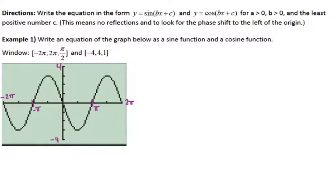We can find the amplitude just by looking at how high or how low the graph goes. The amplitude is 3 because the highest it goes is positive 3 and the lowest is negative 3. Regardless of whether we're writing this as sine or cosine, the amplitude will be the same since we're working from the same graph.